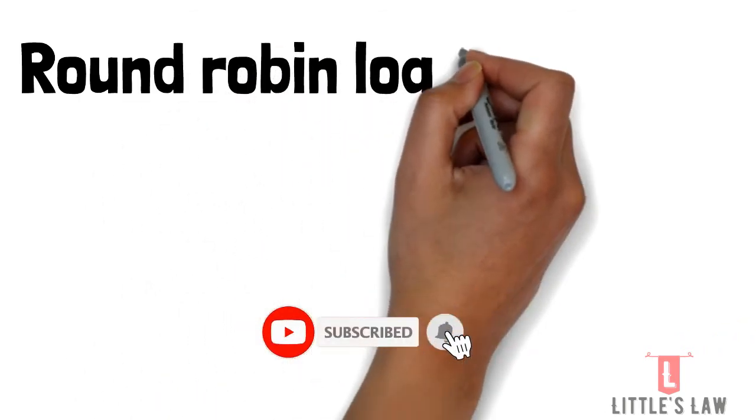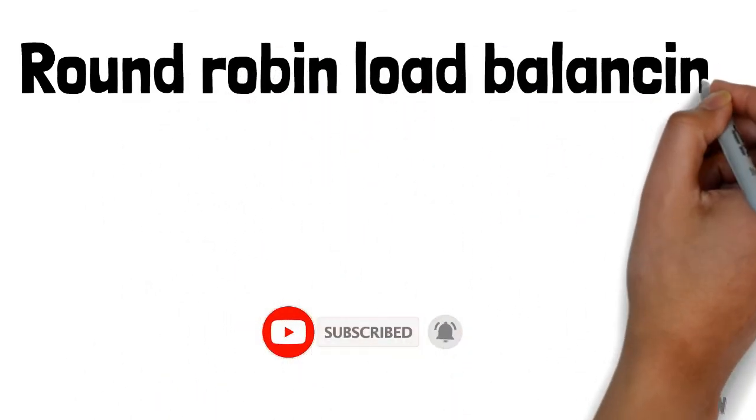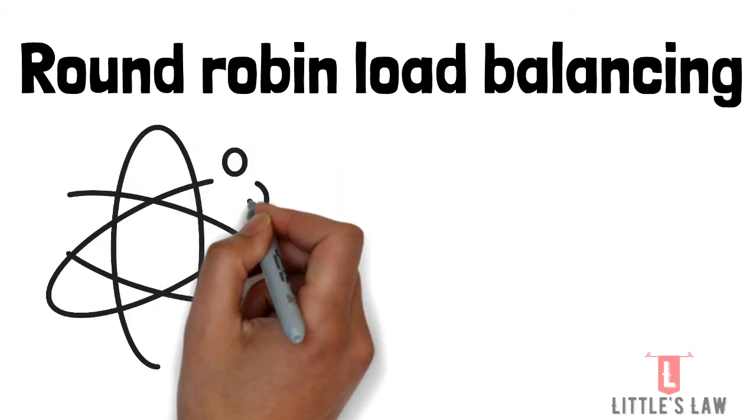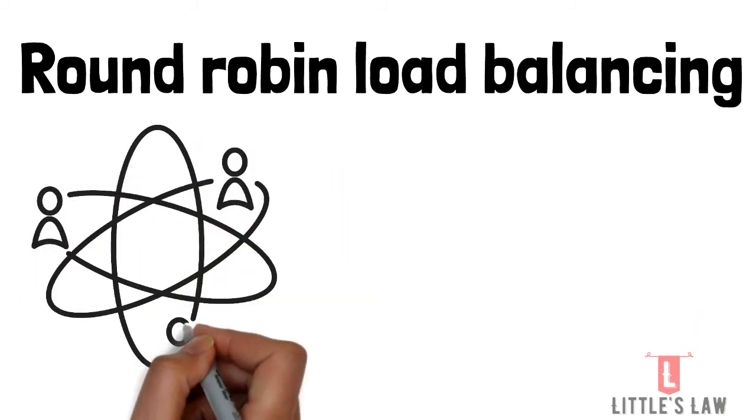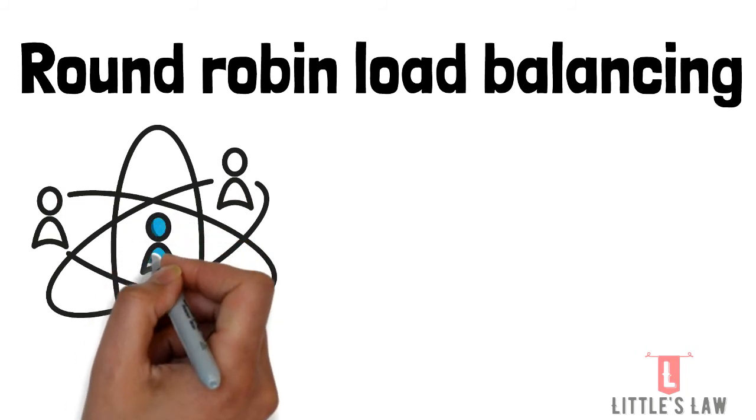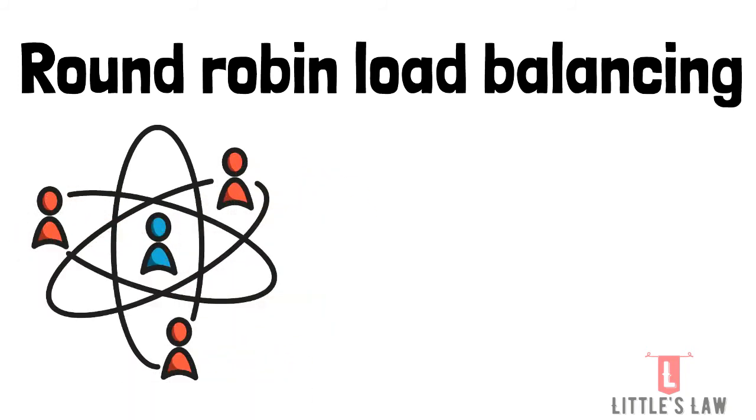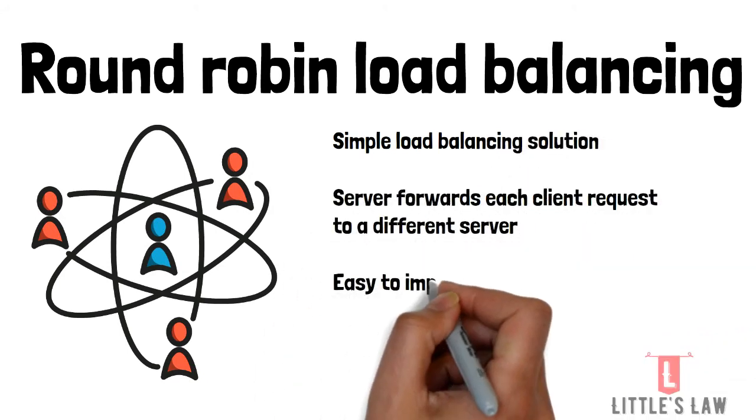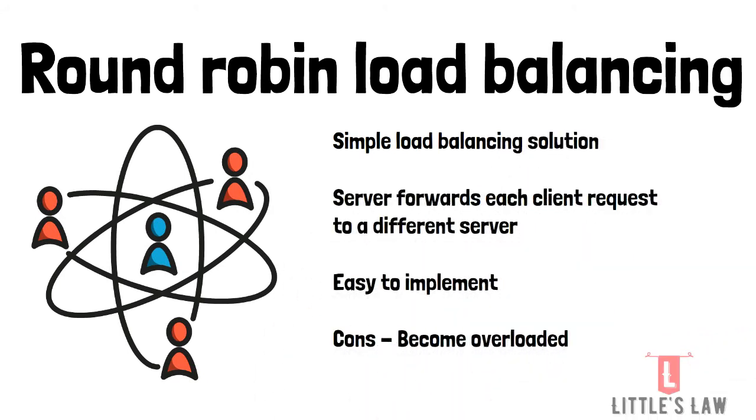Round robin is a simple load balancing solution for making sure that a virtual server forwards each client request to a different server based on a rotating list. This is easy for load balancers to implement but does not take into account the load already on a server. There is a danger that a server may receive a lot of processor-intensive requests and become overloaded.